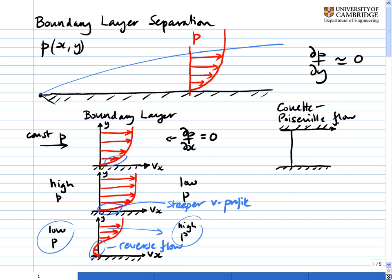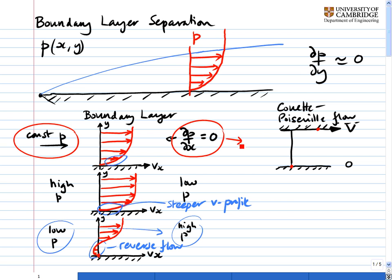Let's look at the case of pure Couette flow. We have a top plate moving at velocity v and a bottom plate that's stationary. By the no-slip condition, the velocity at the bottom is zero and the velocity at the top plate is v. In pure Couette flow, dp/dx equals zero, and we get a linear velocity profile between the two plates. It's not quite the same as a boundary layer because the boundary conditions at the top are different, though the boundary condition at the bottom is pretty much the same.